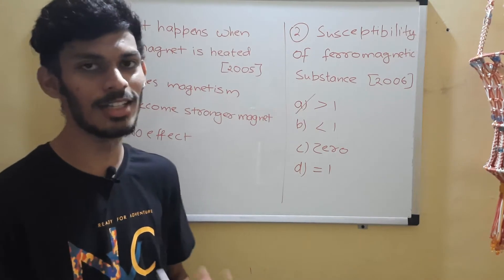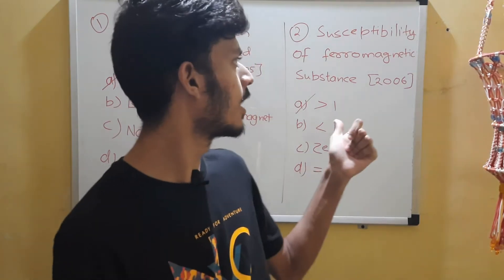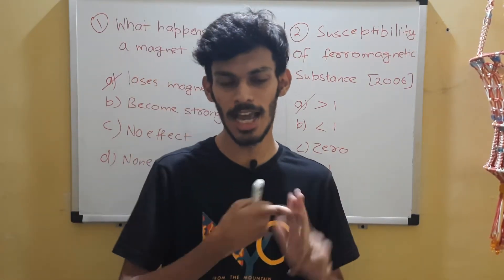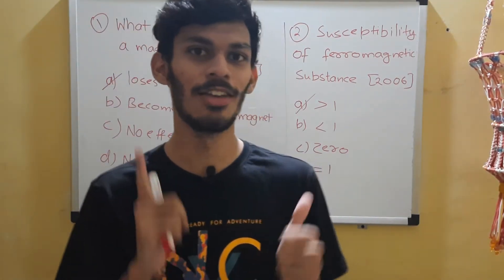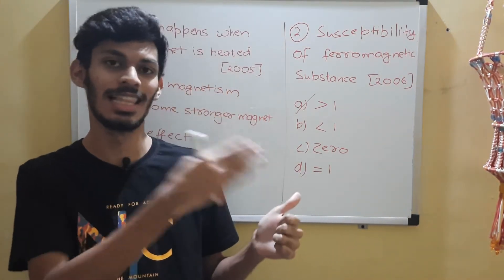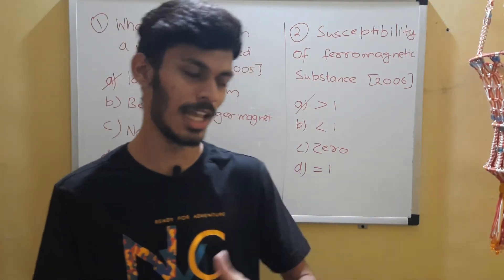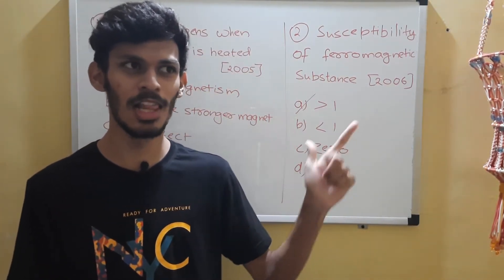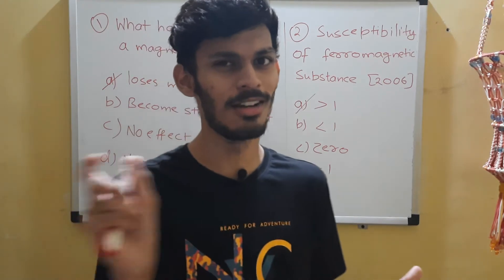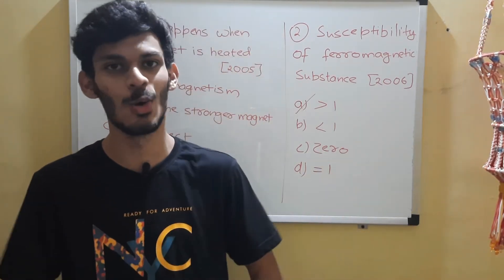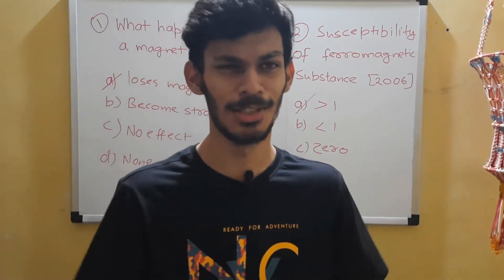Option A, greater than 1, is the correct choice. Let's briefly discuss the other materials. For diamagnetic, the susceptibility is small and negative — less than 0, but a small value. For paramagnetic, it is small and positive, greater than 0 — basically between 0 and 1. For ferromagnetic, it is much, much greater than 1.